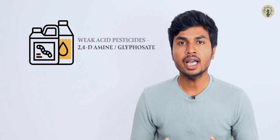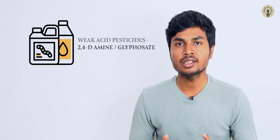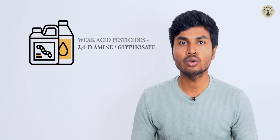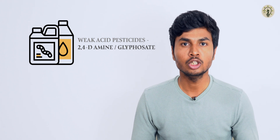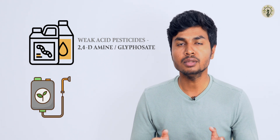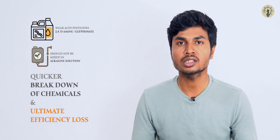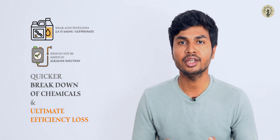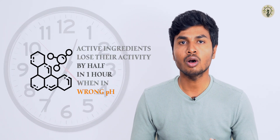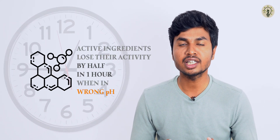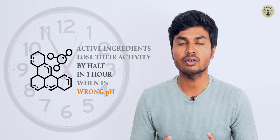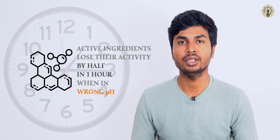For example, weak acid pesticides like 2,4-D amine or glyphosate should not be mixed in alkaline solutions, as it results in quicker breakdown of chemicals and ultimate efficiency loss. It is estimated that some active ingredients can lose half of their activity in one hour if they are in the wrong pH.